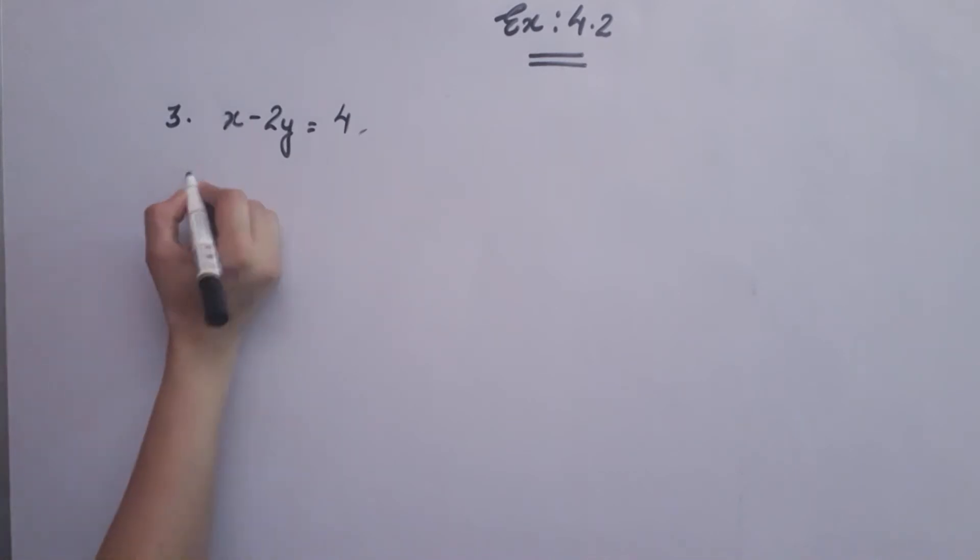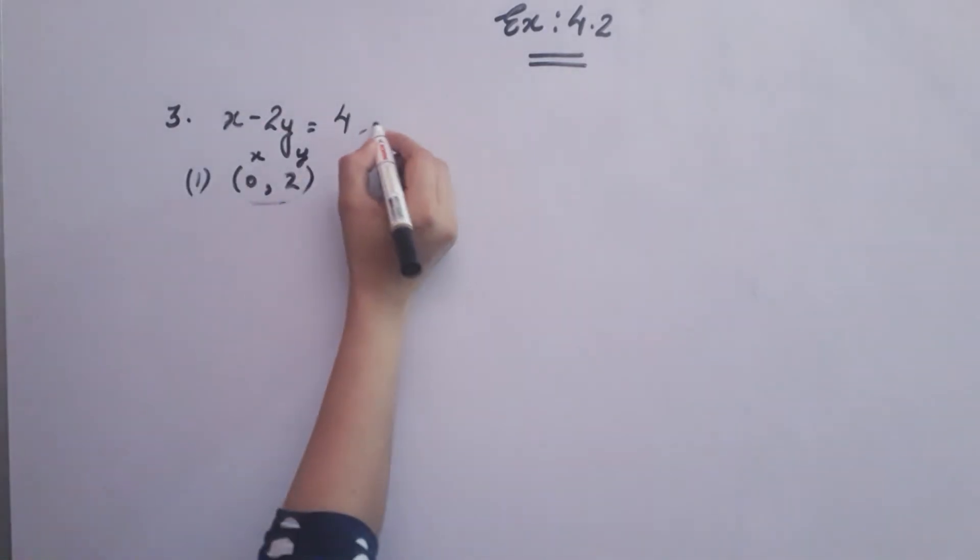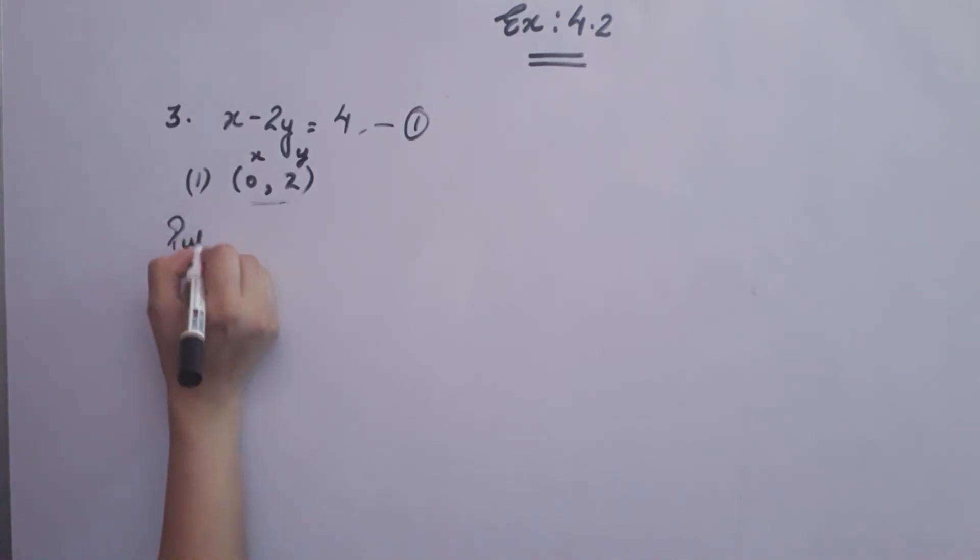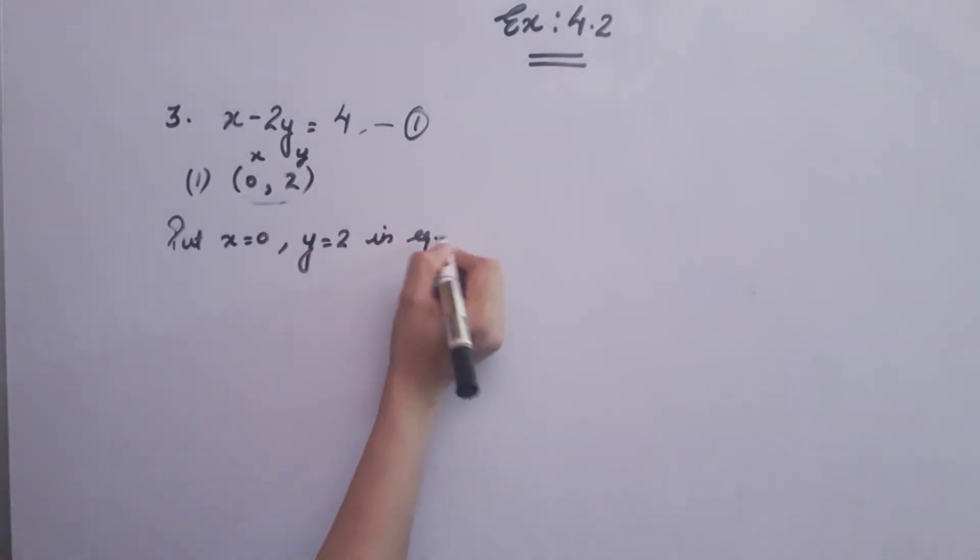Let us proceed with the first part that is (0, 2). When we work on the first value, the first value is x and the second value is y. The solution set will be given to you. We have to put this equation as equation 1. You have to put x equals to 0 and y equals to 2 in equation 1.